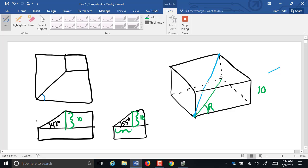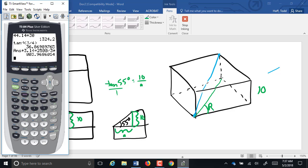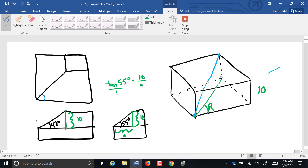I can find this dimension because tangent of 55 degrees equals 10 over little a. So it's 10 divided by tangent of 55, which is 7.002.